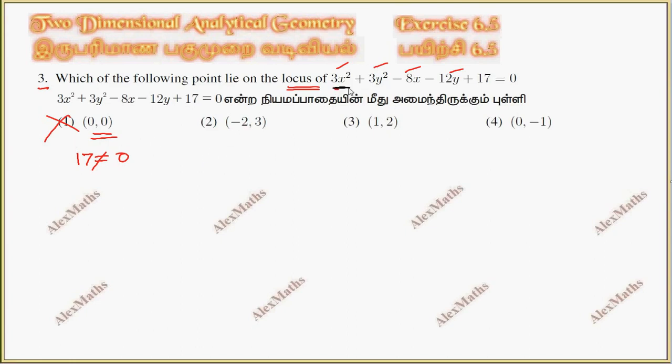Substituting (-2,3) into the equation: 3 into (-2) squared equals 12, plus 3 into (3) squared equals 27, minus 8 into (-2) gives plus 16, minus 12 into 3 gives minus 36, plus 17.